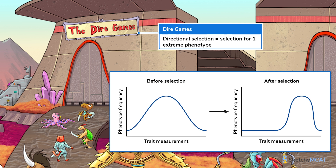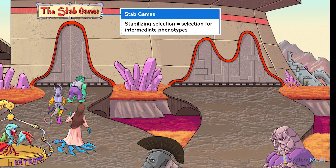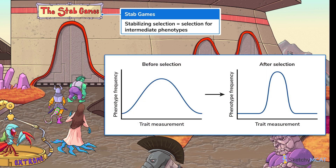In the next round of the dire games, if there's a different selection pressure, the largest gladiators could be selected instead. The second type of selection is stabilizing selection, represented by the stab games. Stabilizing selection occurs when intermediate phenotypes are selected for. Under stabilizing selection, moderate traits become more common each generation, and the average measurement of that trait shifts towards the intermediate values. You can see that only mid-sized gladiators are heading into the stab games. Stabilizing selection is the most commonly observed form of selection, as extreme phenotypes are often disadvantageous for one reason or another.